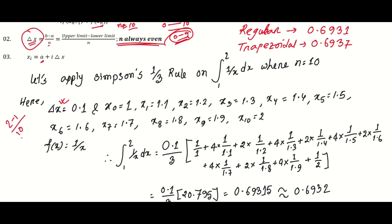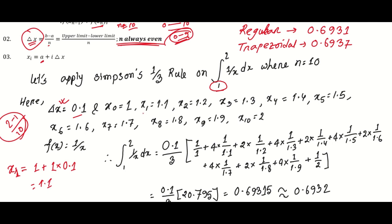That means 2 minus 1 divided by 10 equals 0.1, so Δx = 0.1. Now x_1, x_2, and so on can be calculated the same way. For example, x_1 = 1.1.